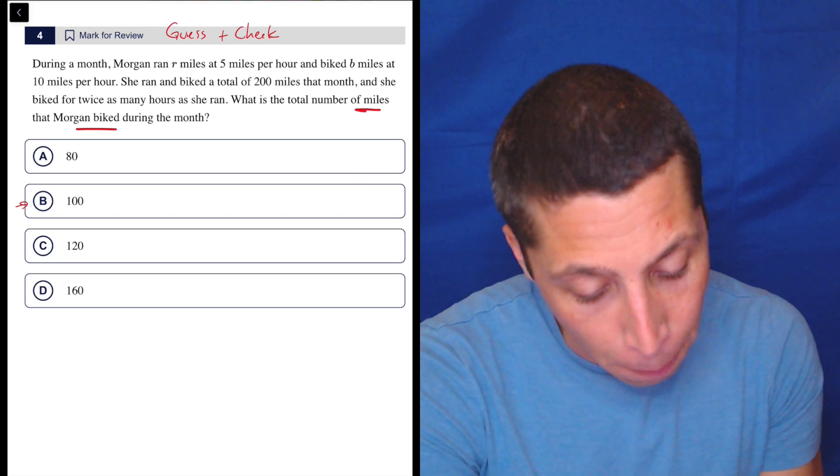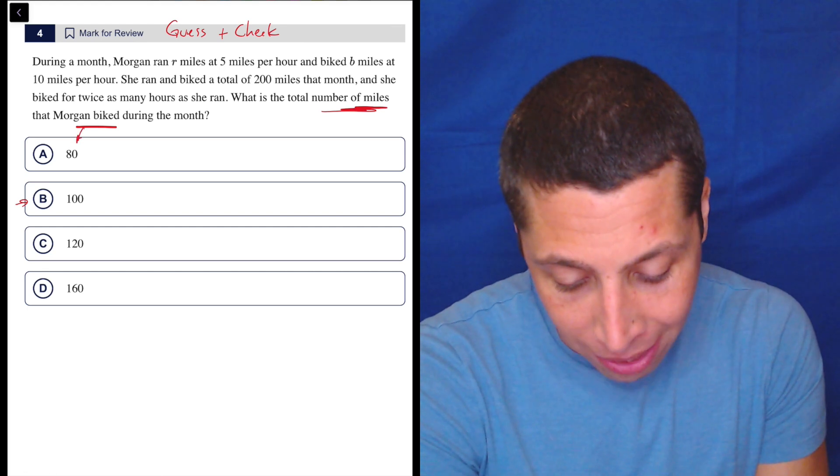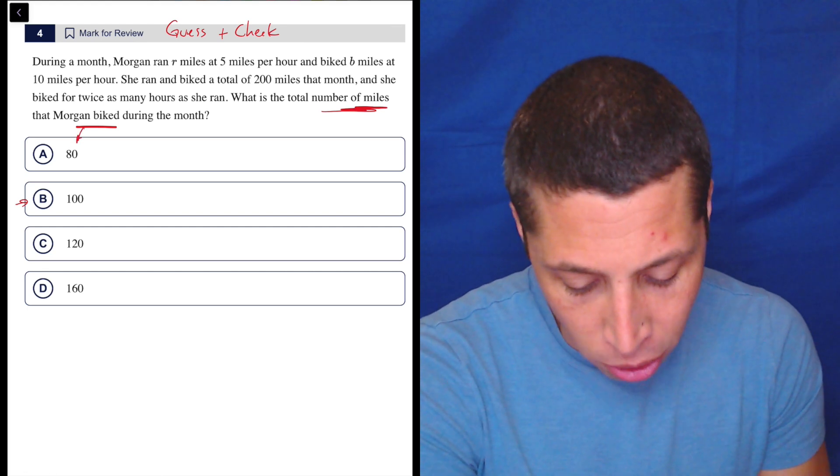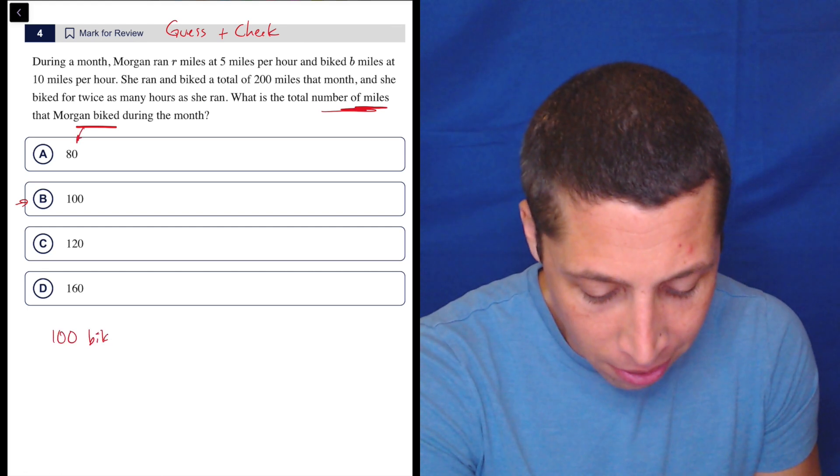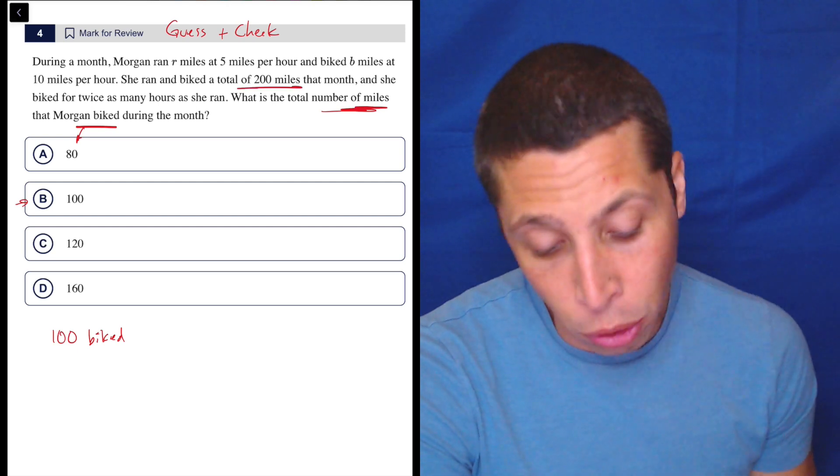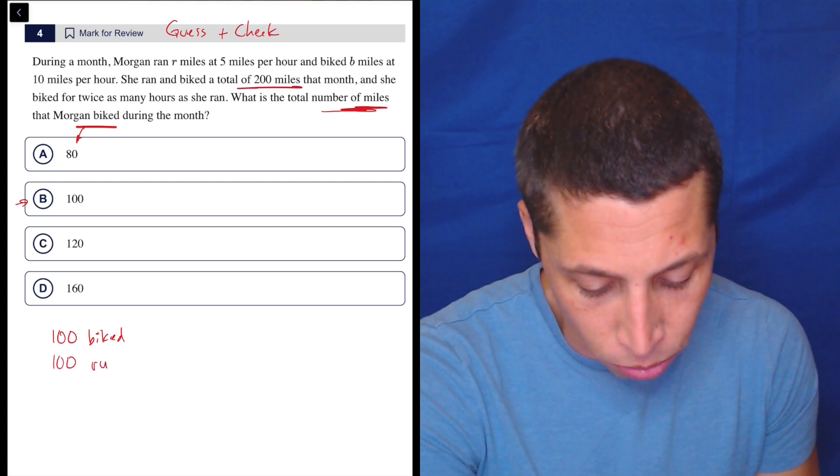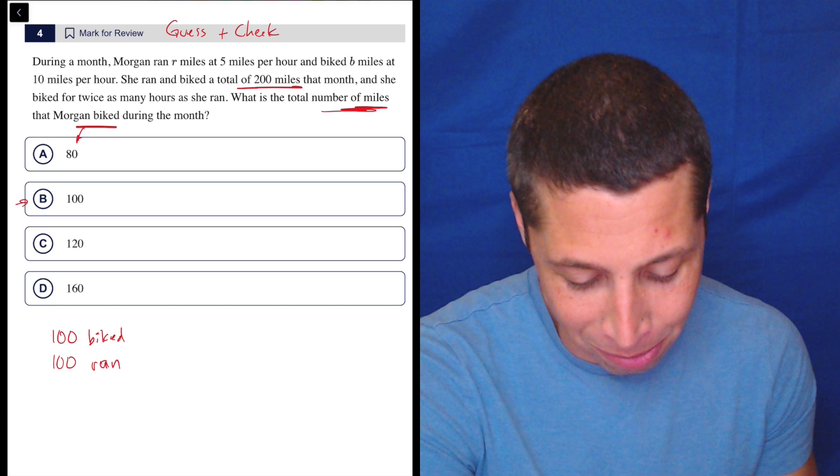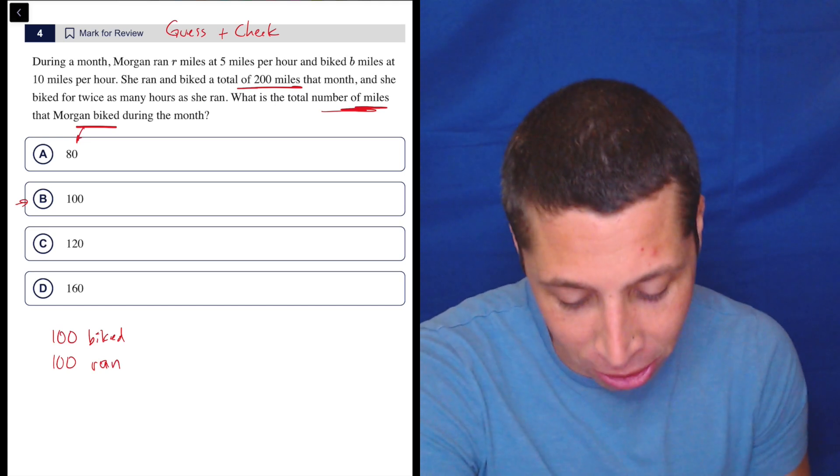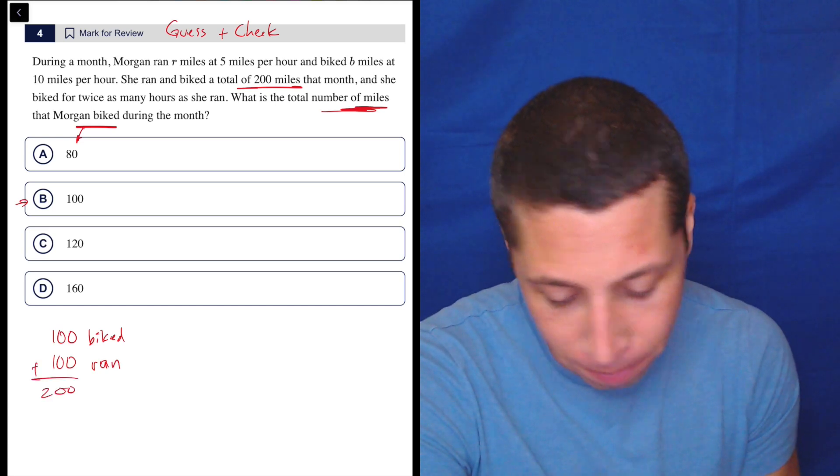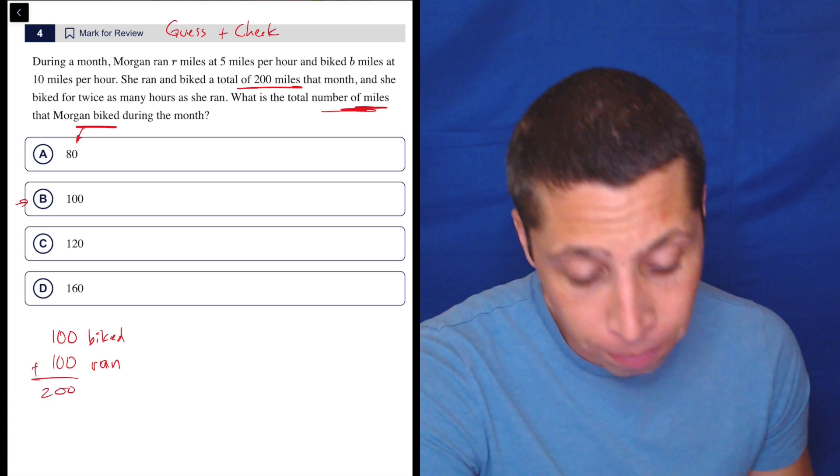So what does that mean? That's the number of miles that Morgan biked. So 100 biked. If there's a total of 200 miles, that means 100 ran. So there's our 200, and that's pretty easy for us to do.